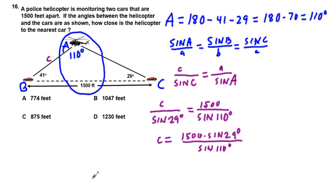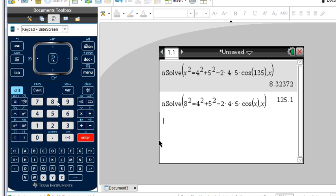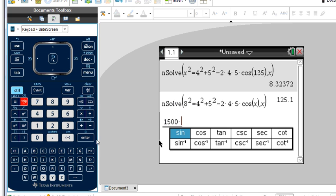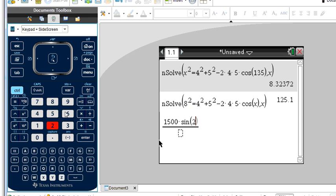So going to our calculator, now we made sure that we were in degrees and not radians. Okay, we put 1500 times the sine of 29 degrees over the sine of 110 degrees.